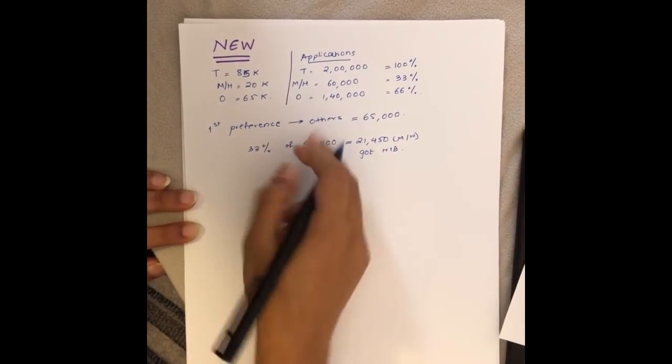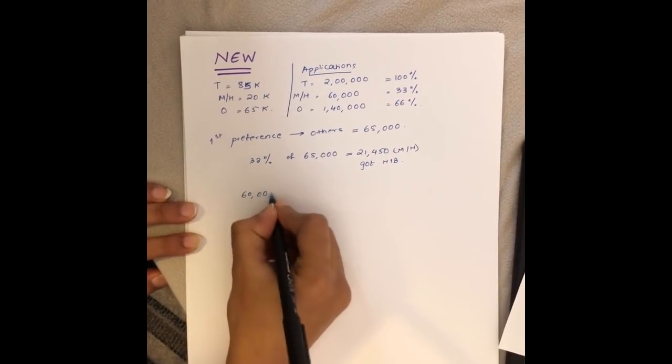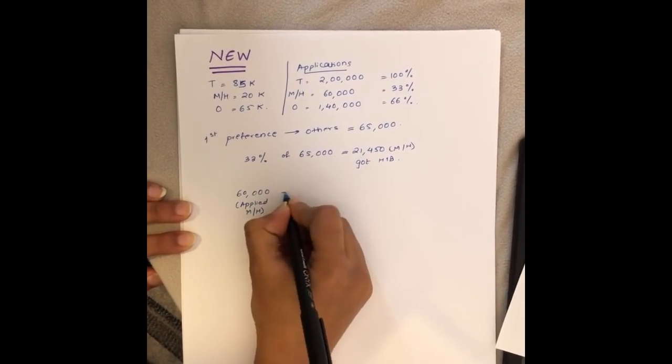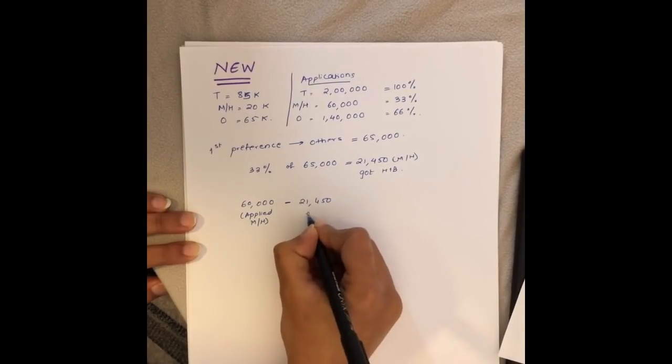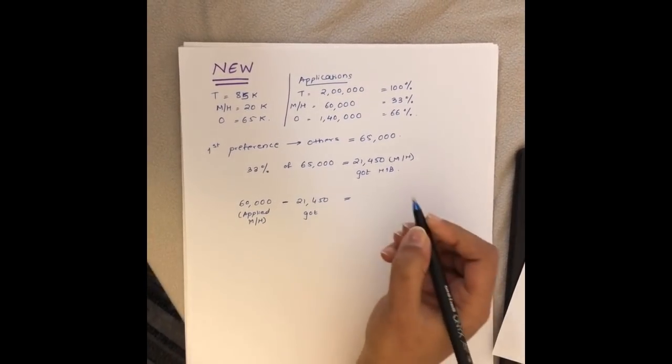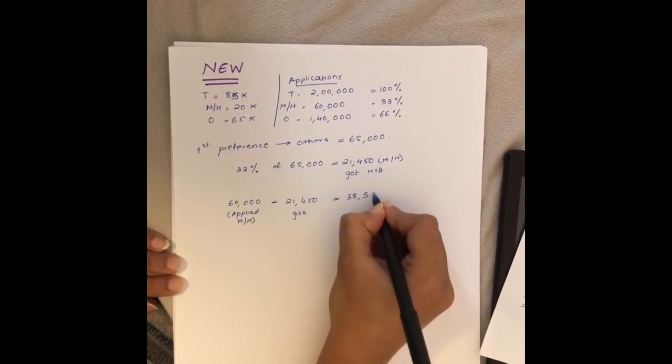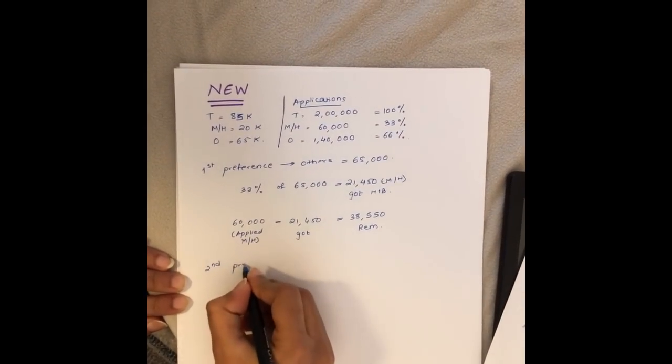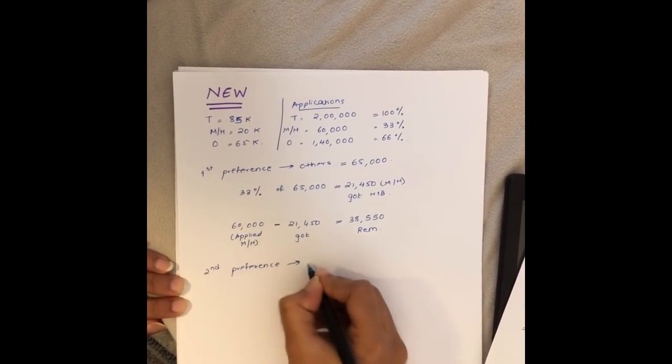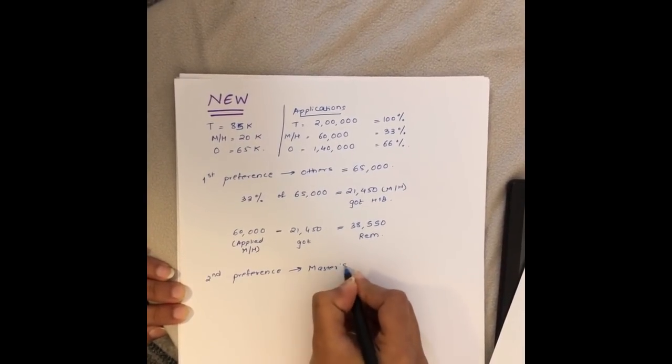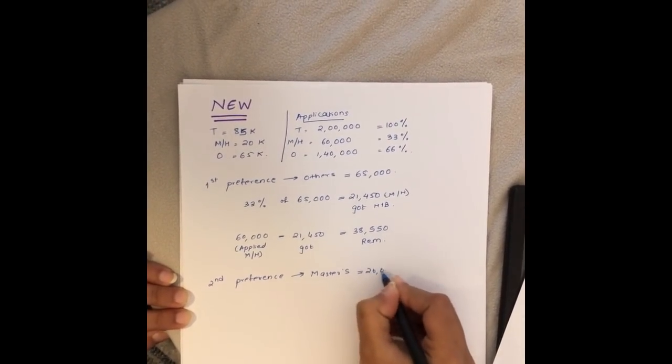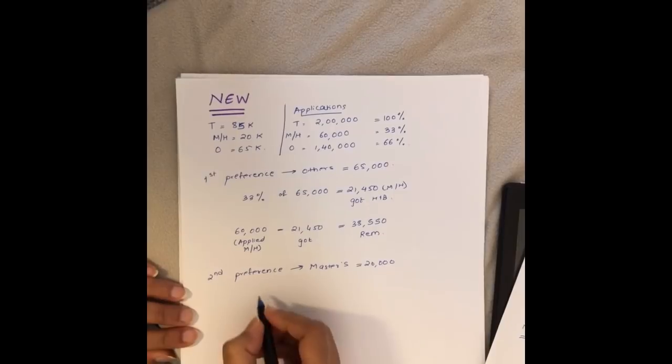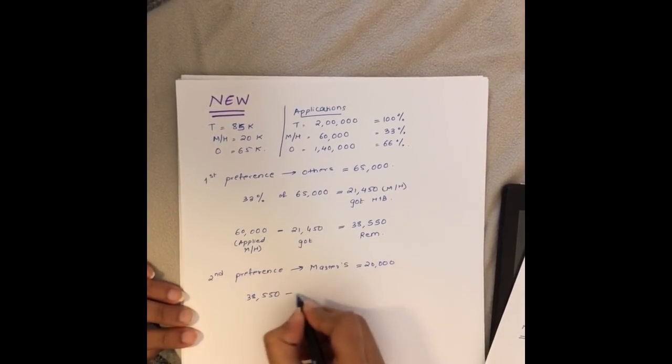If you consider the total who applied was 60,000 for masters, minus 21,450 who have got, remaining for us is 38,550. Now this is very fair because they would go into second preference which is the masters slot of 20,000. So 38,550 minus 20,000 leaves us with 18,550 remaining.